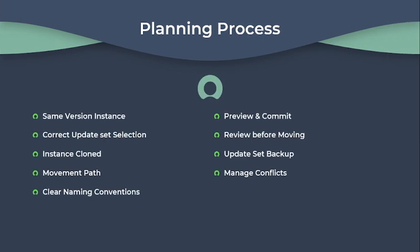Then the planning process for an update set. Before working with update sets, create a standard process for moving customizations from one instance to another. Check that both instances are on the same version, as customizations may not work if they rely on code that has changed between versions. Determine the changes to make in a single update set and complete your update set as you finish small to medium sized tasks. As update sets get larger, it becomes harder to review them, takes longer to identify changes within them, increases the risk of conflicts with other update sets, and takes more time to preview and commit them. This is especially true if the update sets contain schema changes or revisions to large workflows, or if the set has to be backed out.